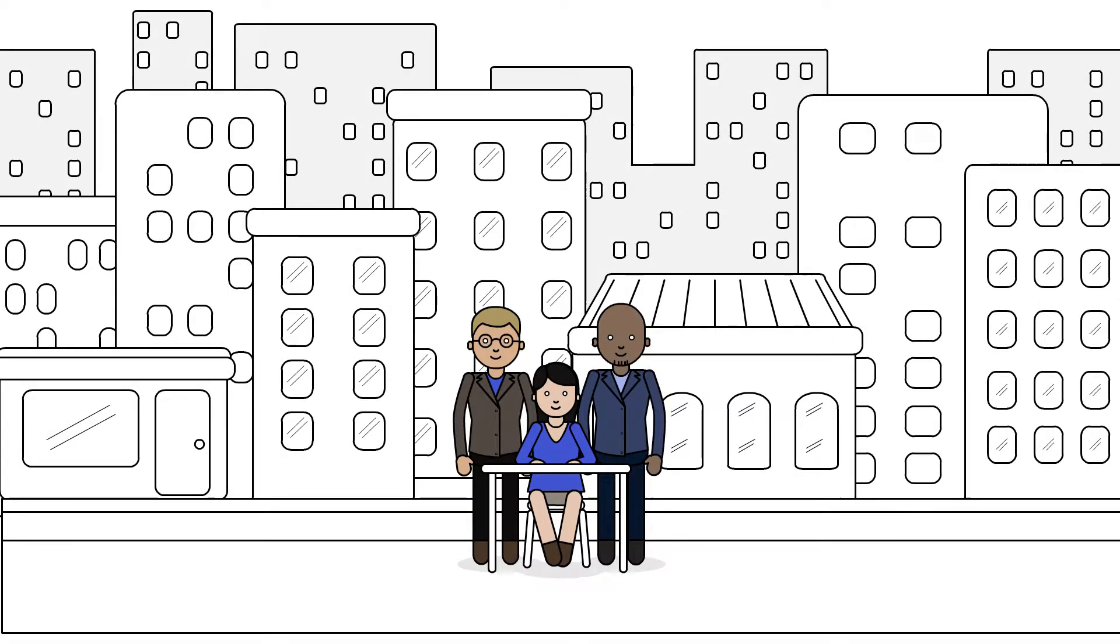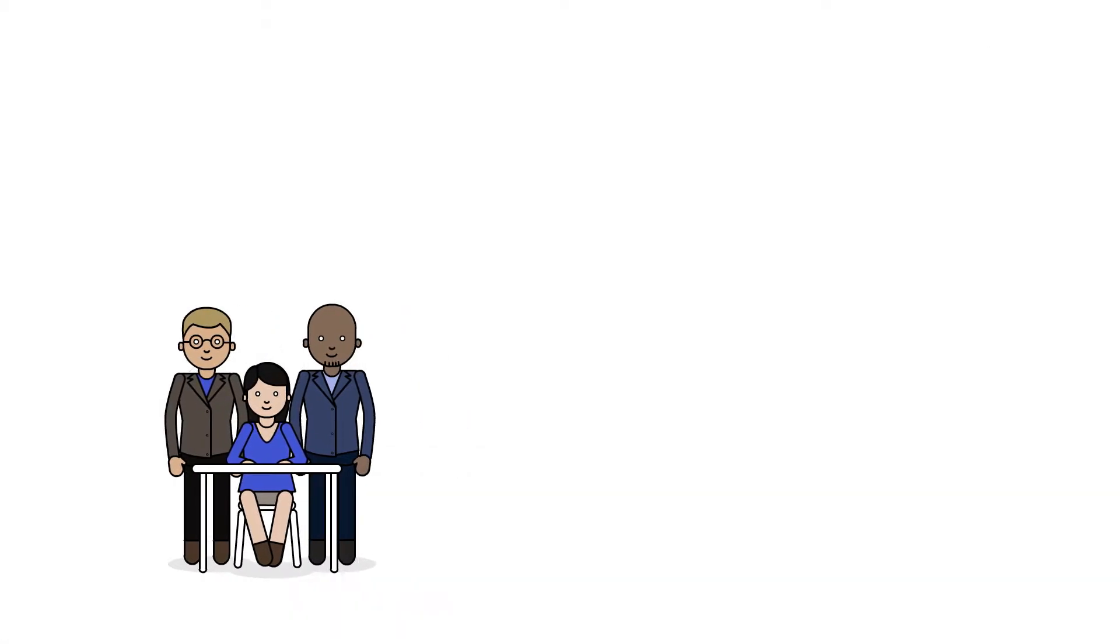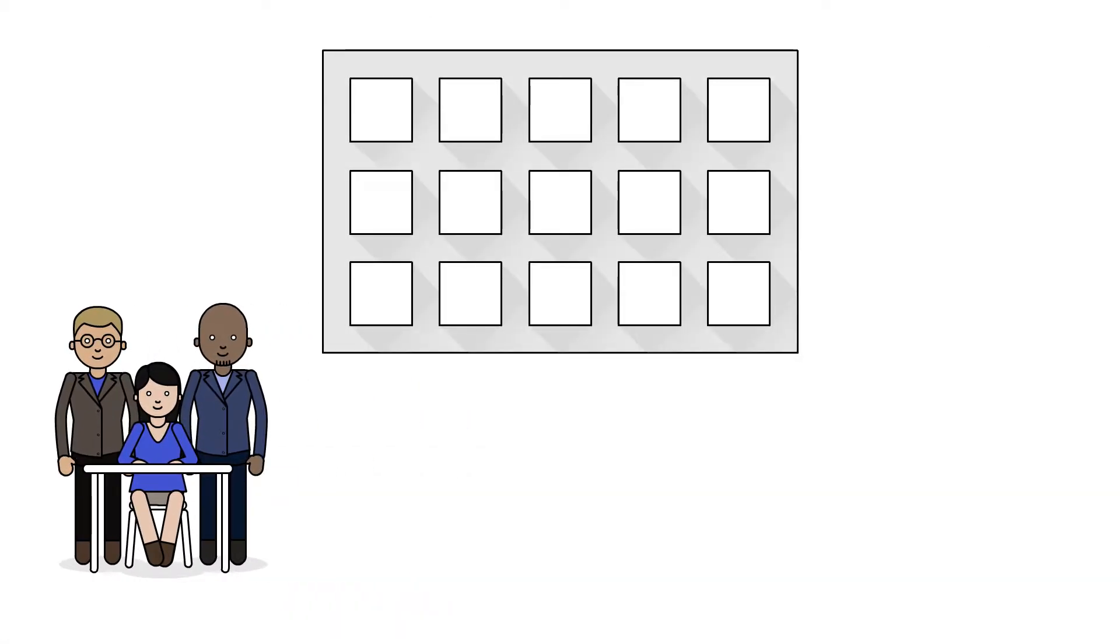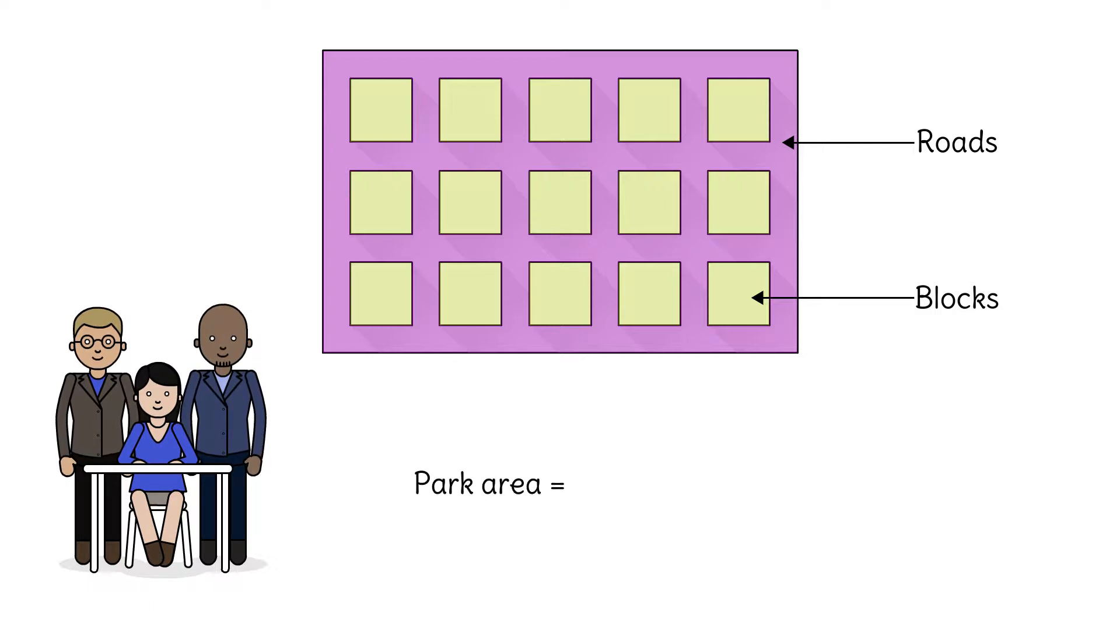A city council has decided to build parks in their downtown. Here's a map. These are the roads, and these are the blocks of buildings. Some of the old buildings will be replaced with parks. The park area will be equal to the road area. How many blocks of parks will be built?